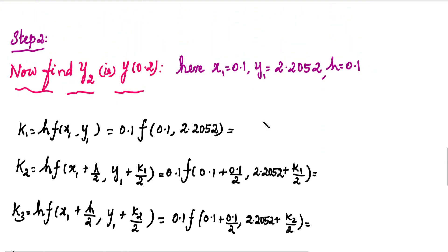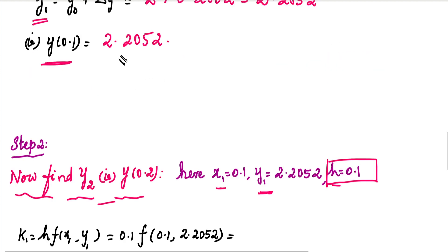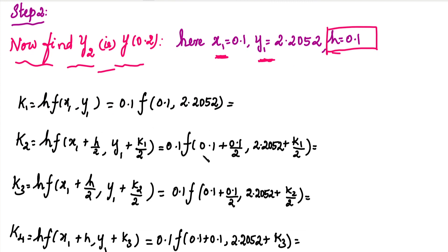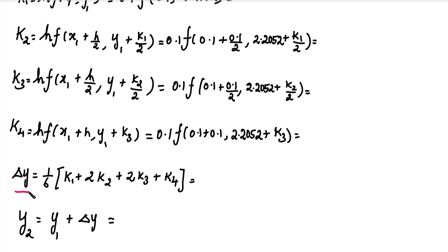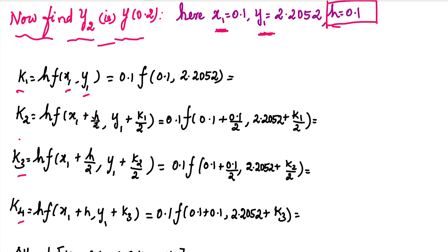Now we calculate y2. In step 2, we use x1, y1, and the same h value. For y2 calculation, we change the input values: x1 = 0.1, y1 = 2.2052. The delta y formula remains the same, and the same function 0.1 into (y minus x) is stored. We just change the input values for k1, k2, k3, k4.